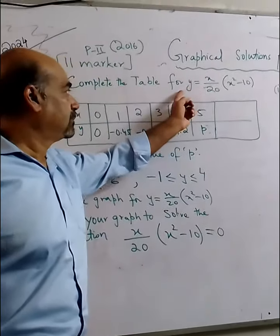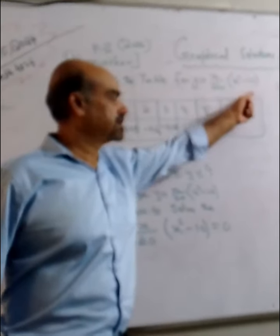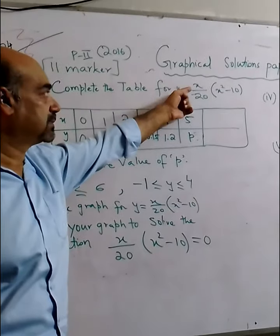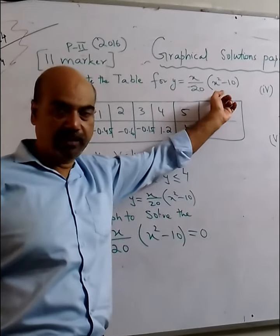Graphical solutions. This is your main function which is given, y is equal to x upon 20, x square minus 10.